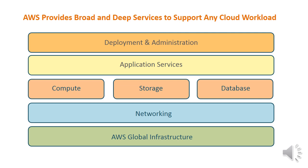AWS Amazon Web Services provides broad and deep services to support any cloud workload. AWS Global Infrastructure is the baseline. Among that you will have a networking layer. So you can have compute, storage and database — these are separate — and above that you can have the application services. Finally, deployment and administration is on top.